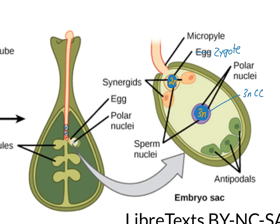To summarize: the pollen grain sticks to the stigma and germinates, and the two sperm cells make their way down to the ovule and enter the embryo sac within the ovule. One sperm cell goes into the central cell and fuses with the two nuclei there, forming a triploid central cell. And one sperm cell enters the egg, and the nucleus of that sperm cell fuses with the egg nucleus forming a diploid nucleus — and that is now a zygote.